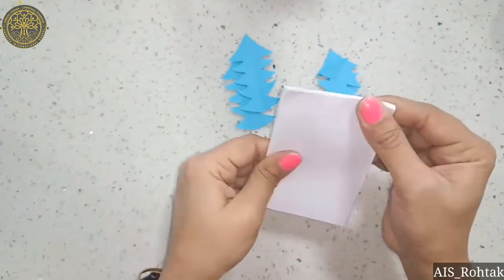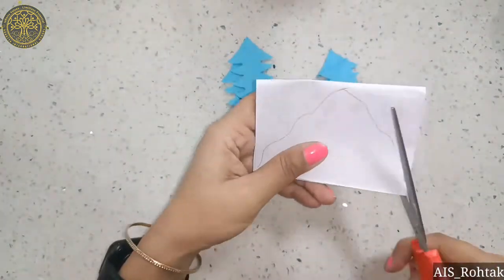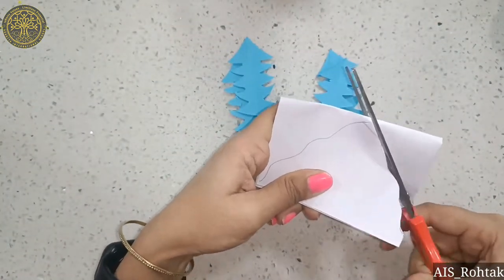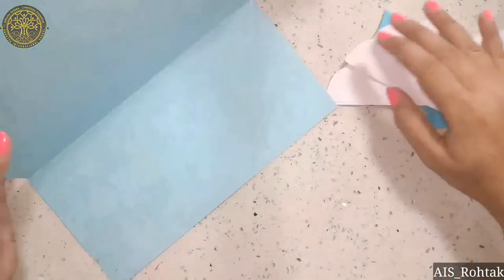Now we take a white sheet and draw some mountains. Fold it into half, again fold into half, then draw the mountain and cut it.